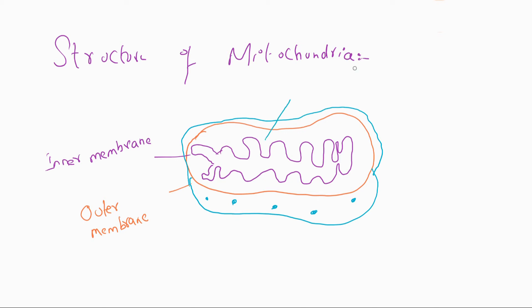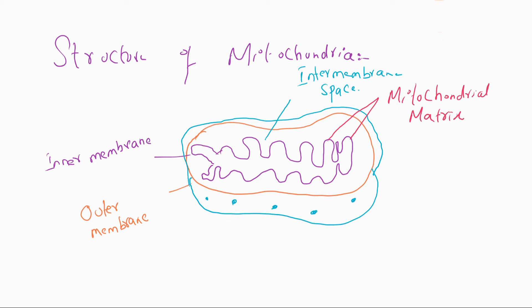The inner membrane forms infoldings into the inner chamber, which is known as the mitochondrial matrix. These infoldings are also called cristae.